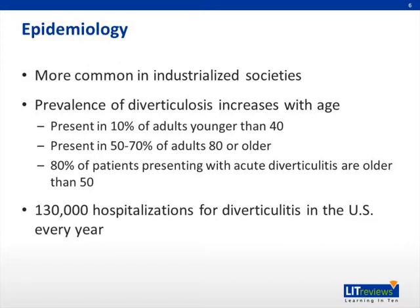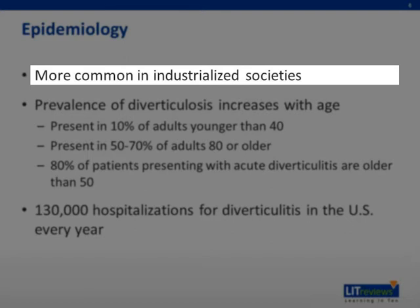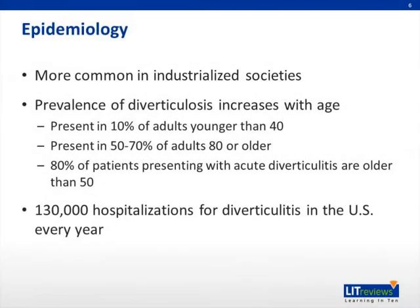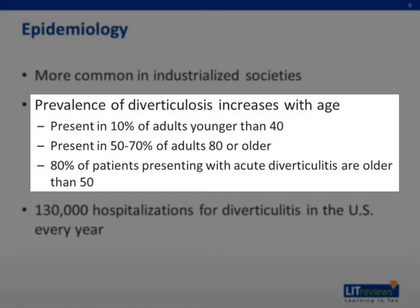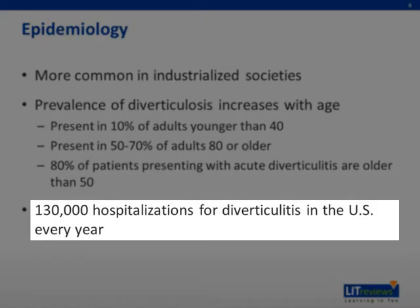Let's start with the epidemiology. Diverticulitis is a disease process that is more common in Western and industrialized societies. Additionally, the prevalence of diverticulosis increases markedly with age. It is only present in 10% of adults under age 40, but is estimated to be present in 50% to 70% of adults age 80 or older. Overall, approximately 80% of patients presenting with acute diverticulitis are older than 50 years of age. Acute diverticulitis is responsible for approximately 130,000 inpatient hospitalizations in the United States per year, and is associated with substantial health care expenditures.